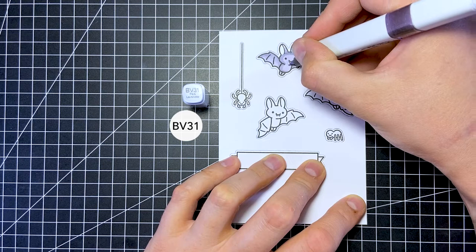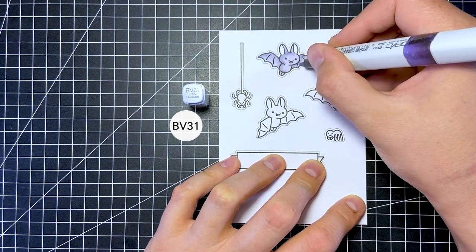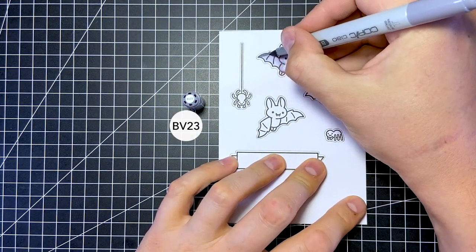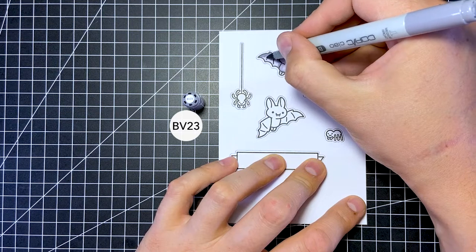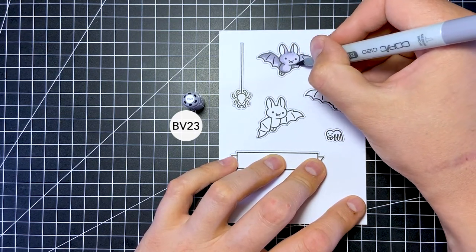If you want more details on any supply I use during the video, be sure to check out the blog post linked in the description to learn more about that. If you want to learn more Copic coloring combinations for the bats, you'll find a link to my Pinterest board in the description where I share a bunch of different coloring options for the bats and other critters.